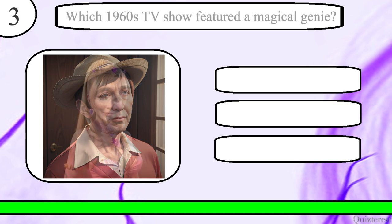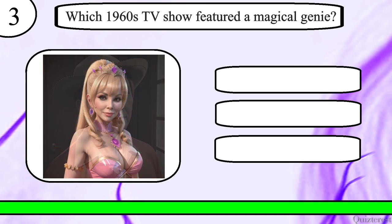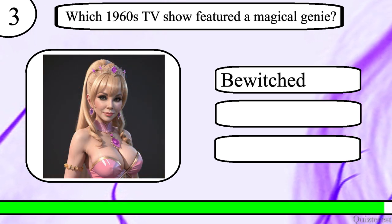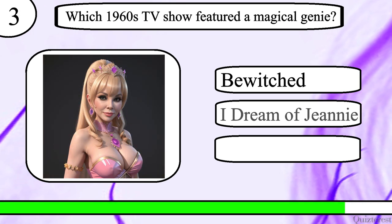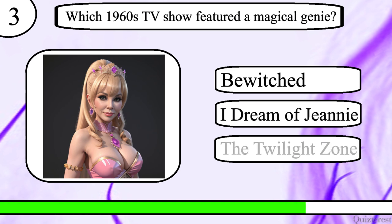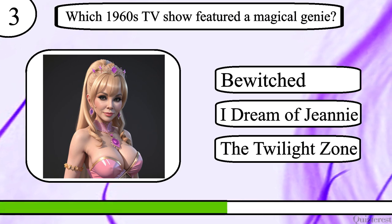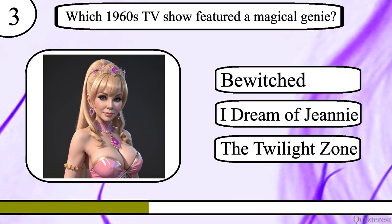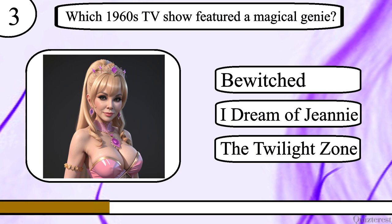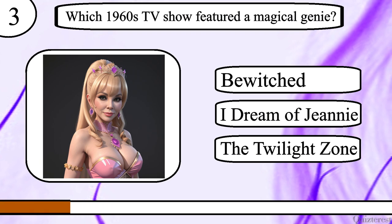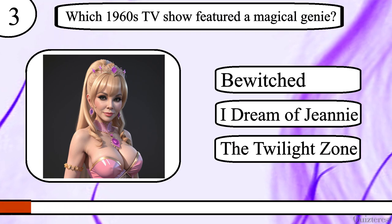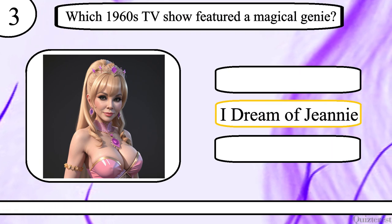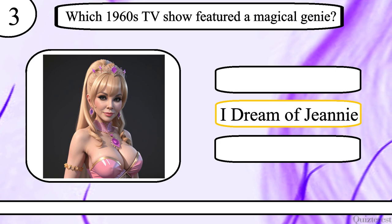Question 3. Which 1960s TV show featured a magical genie? Bewitched, I Dream of Jeannie or The Twilight Zone? The correct answer is I Dream of Jeannie.